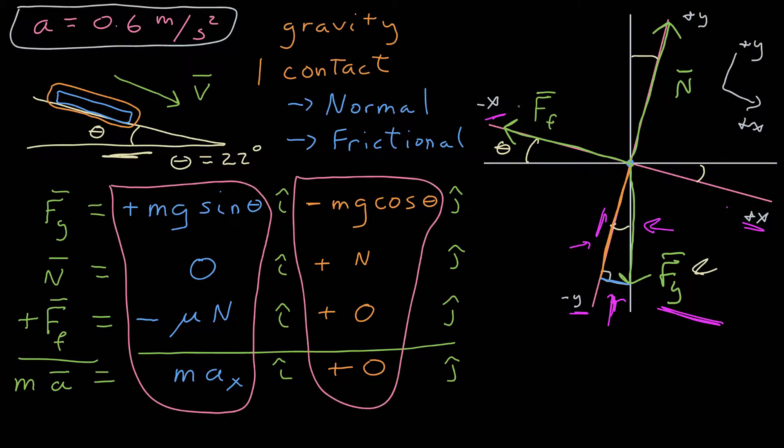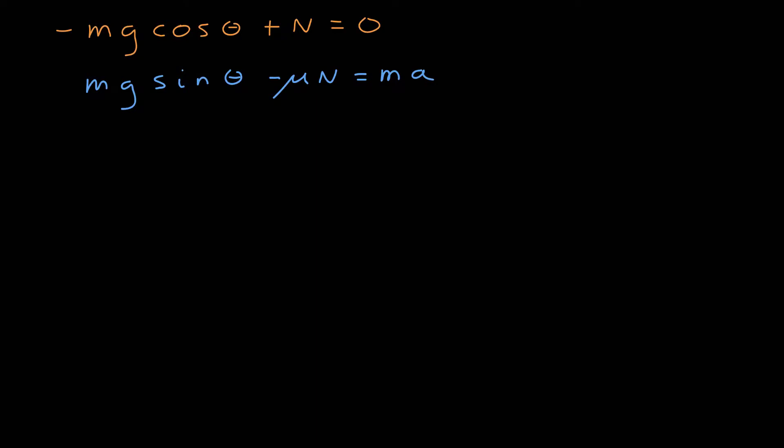Now I can use these to find scalar relationships between my parameters. I'll have mg sine theta minus the coefficient of kinetic friction times the normal force is equal to the mass times the acceleration down the incline. I also have mg cosine theta plus the magnitude of the normal force is equal to zero. I've rewritten those equations too, and it looks like I have a direction to solve. I can look at this equation and solve for the magnitude of the normal force, and then substitute it into the blue equation.